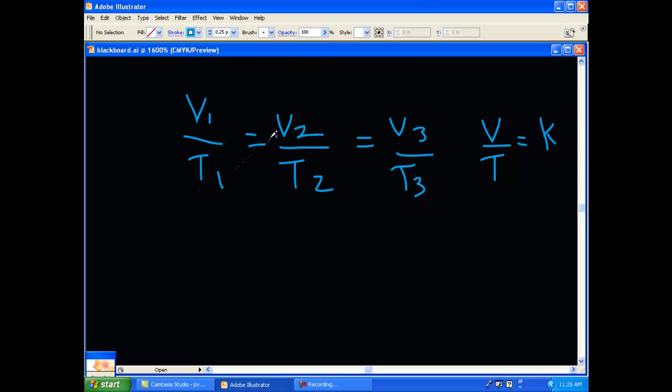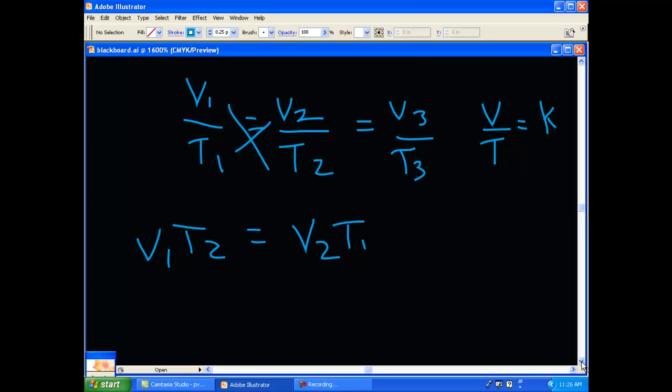Still another way to say it is if you just cross-multiply these two guys, and you get V1 T2 is equal to V2 T1. And let's see why that is. Why is it that whenever you have an increased volume, you have increased temperature and vice versa?